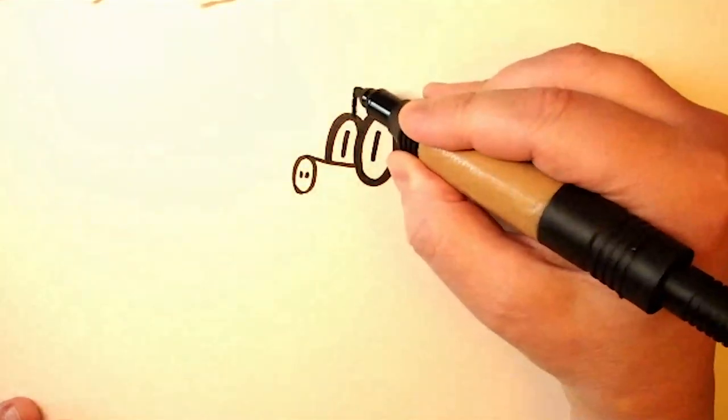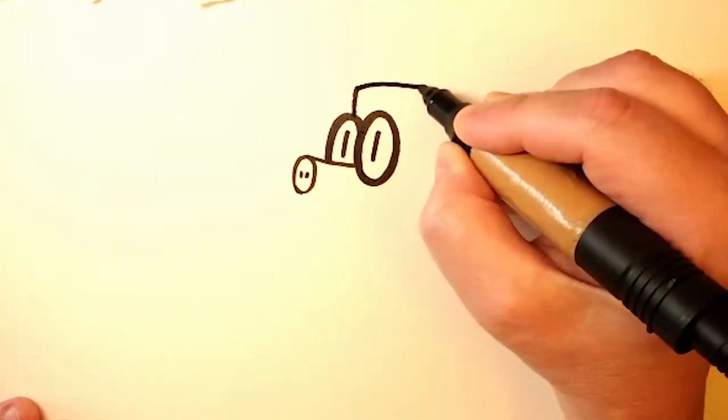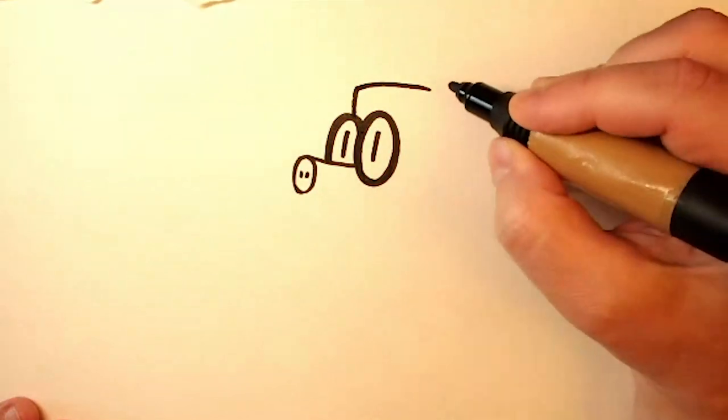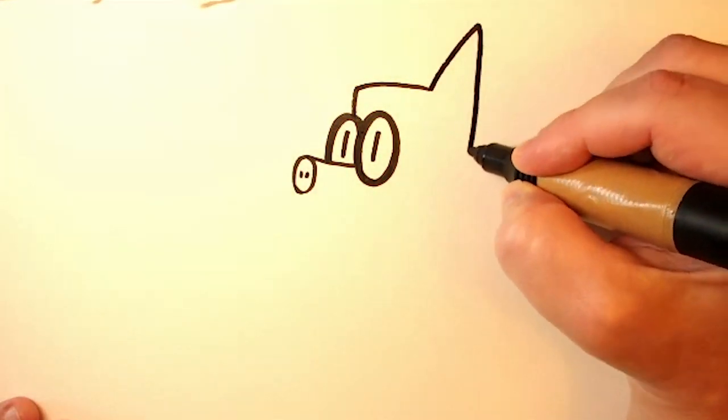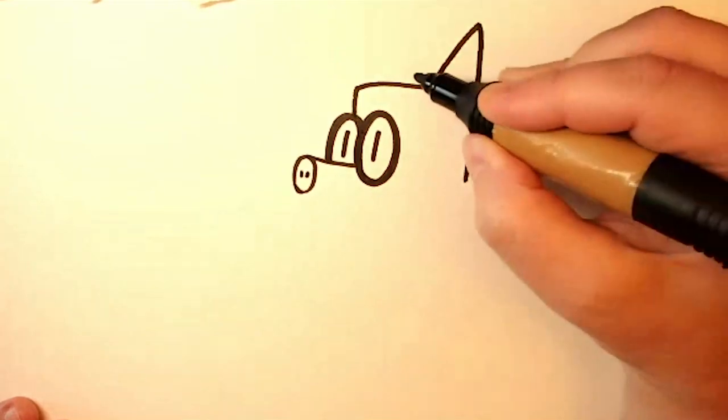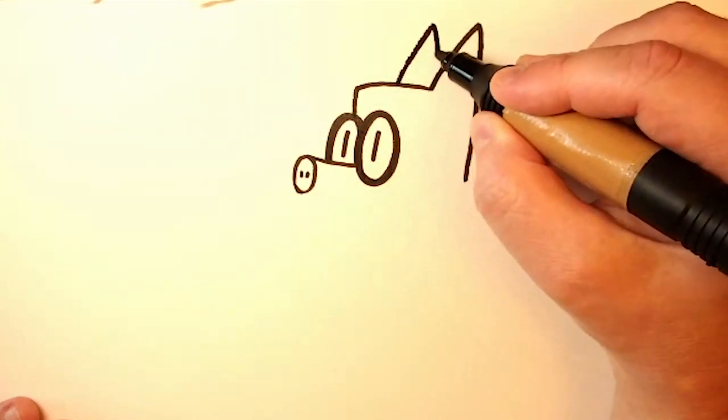And then we go straight up and across to make his forehead and the top of his head. And then a pointy ear here. And another one here.